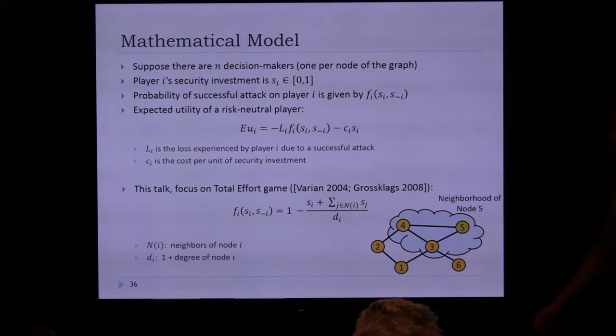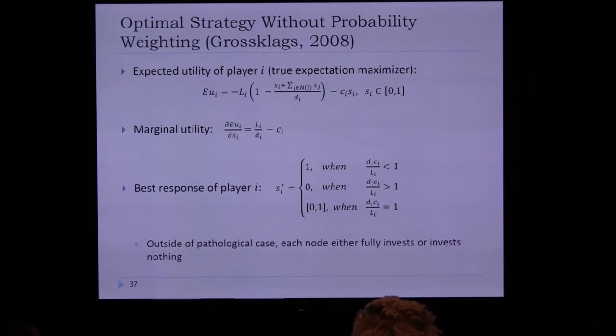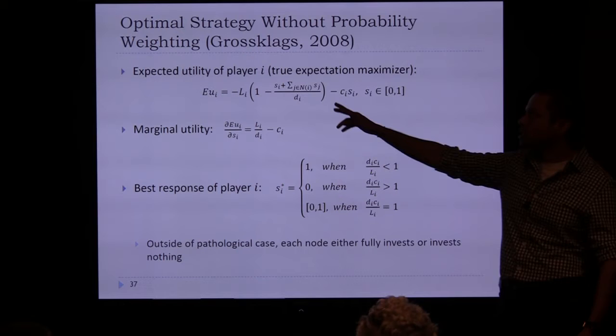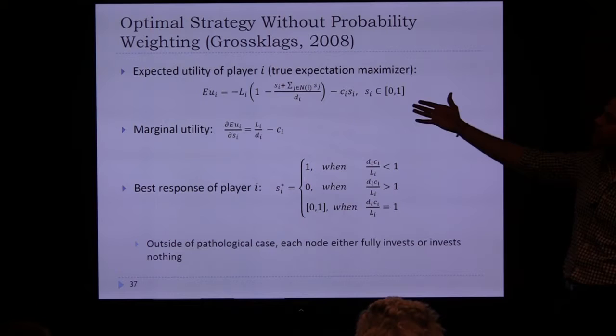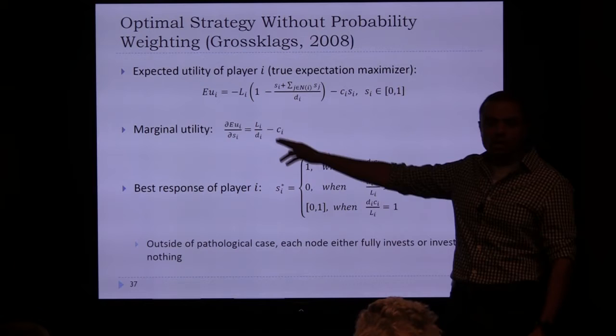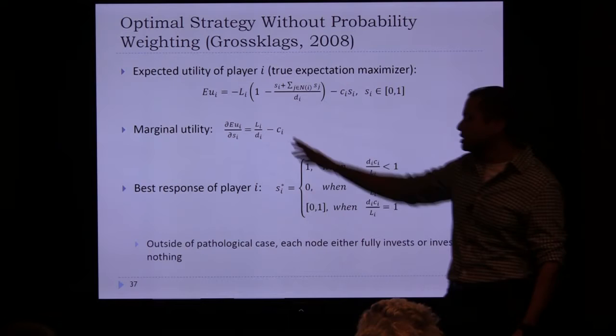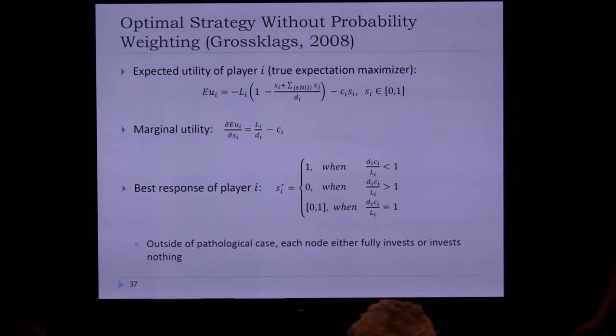Establishing a baseline with risk-neutral players: taking the derivative of the utility with respect to s_i gives a constant. If that constant is positive, the player invests fully (s_i=1); if negative, they invest nothing. This yields a trivial binary equilibrium — everyone either fully invests or doesn't invest at all in security.